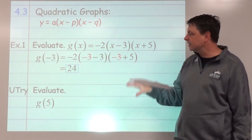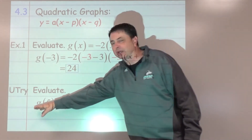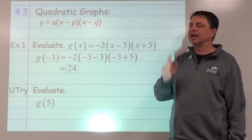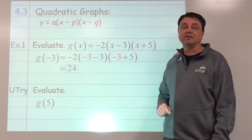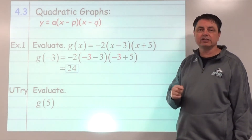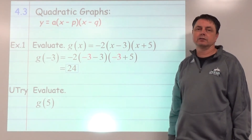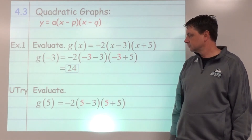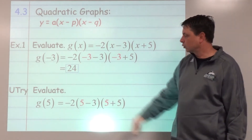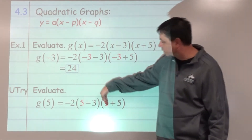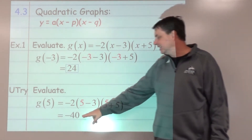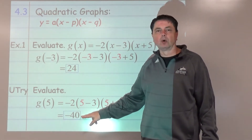You try this one: evaluate g of 5 using the same function. Pause here until you've got your answer. Again, we're replacing x's with 5 — hit the calculator and you should get negative 40.